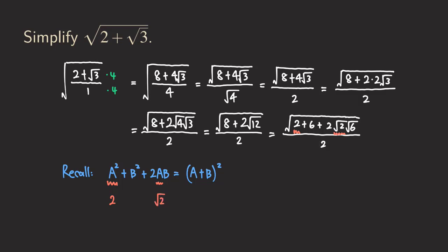Continuing: we have a six and a square root of six. So if we think of that six as b squared, then b would be square root of six. Putting those together, the form matches the perfect square pattern — and there is the two that's there — so we can factor this expression into the quantity a plus b, squared, where a is square root of two and b is square root of six.